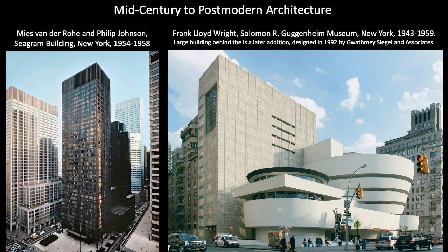Now we need to look at architecture from the mid-century to the post-modern period. Mies van der Rohe's Seagram Building in New York exemplifies the international style that dominated urban construction in the mid-20th century, with its plainly visible structure, rejection of past styles, and lack of ornamentation. Around the mid-century, however, some architects began to depart from the very impersonal principles of the international style, using new structural materials and techniques to create more expressive designs.